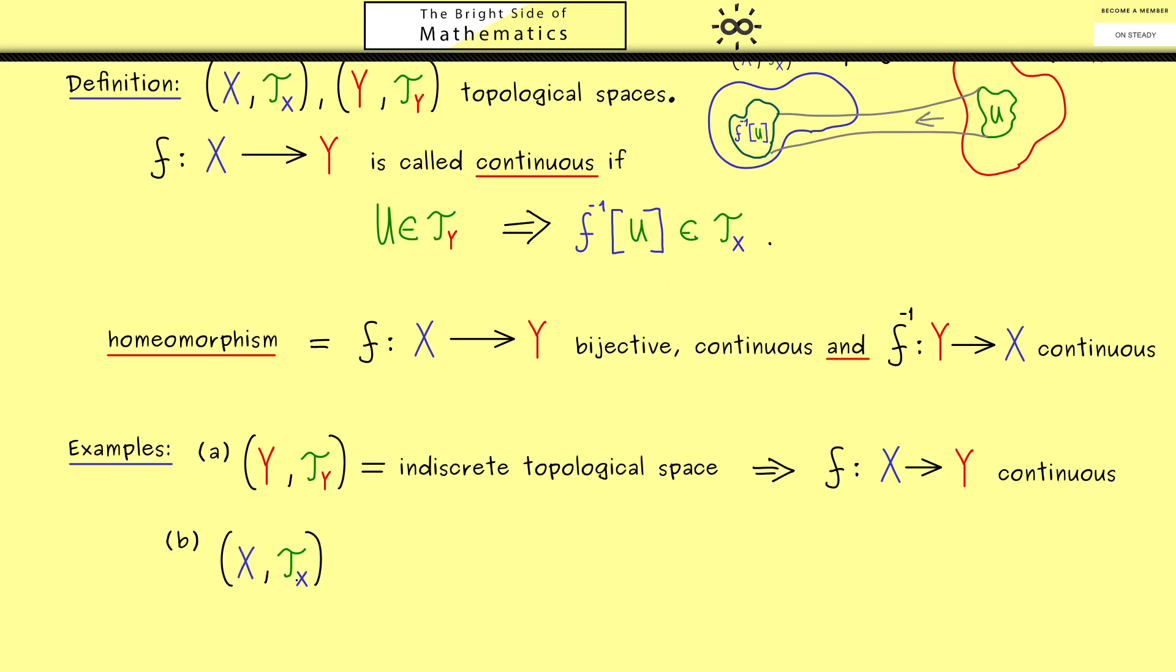Now on the other hand, the other extremum would be that X is the discrete topological space. Here please also recall this means that all subsets of X are open sets. So Tx is simply the power set of X.